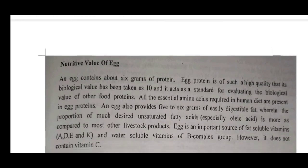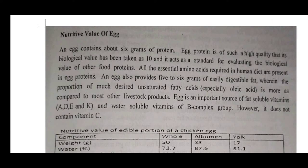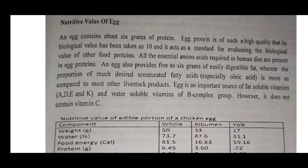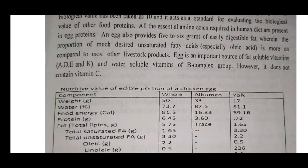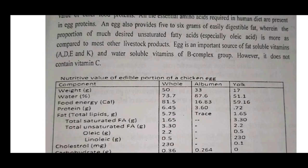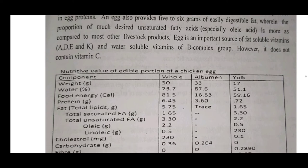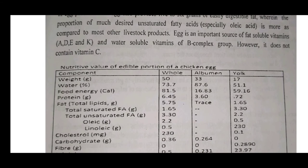The nutritive value of an egg: an egg contains about 6 grams of protein. Egg protein is of such high quality that its biological value is taken as 100 and acts as the standard for evaluating the biological value of other food proteins. All essential amino acids required in the human diet are present in egg protein. An egg also provides 5 to 6 grams of easily digestible fat, with a high proportion of unsaturated fats — more than most other livestock products. It is an important source of fat-soluble vitamins A, D, and K, and water-soluble B-complex vitamins.